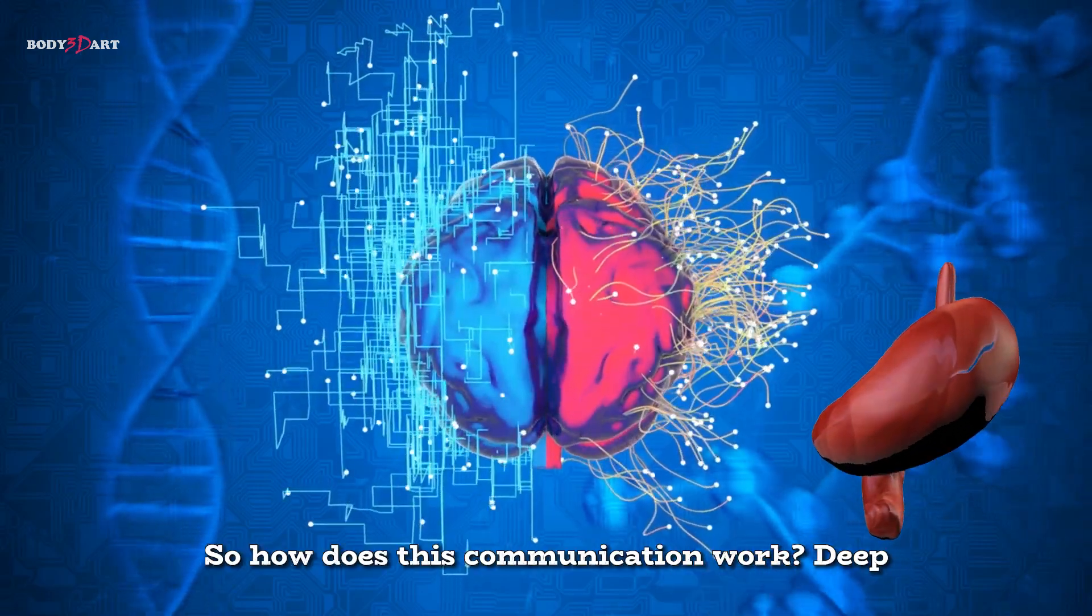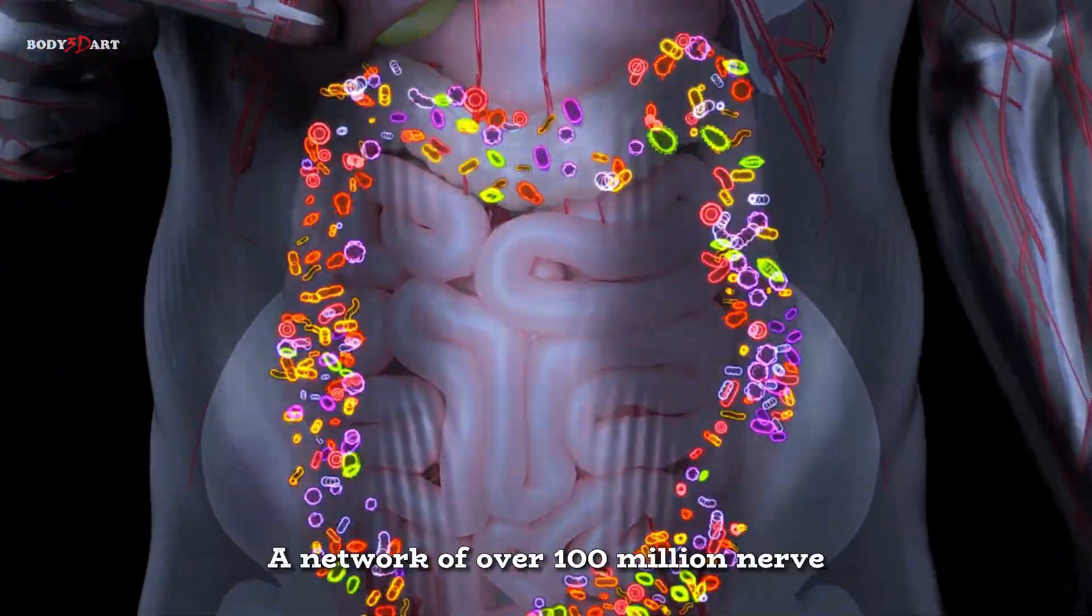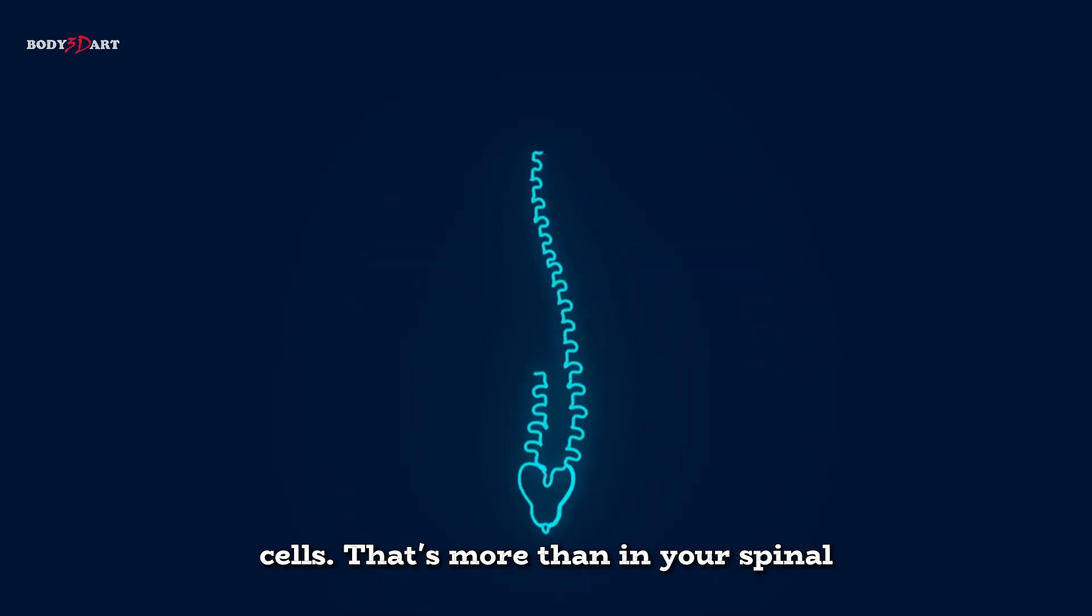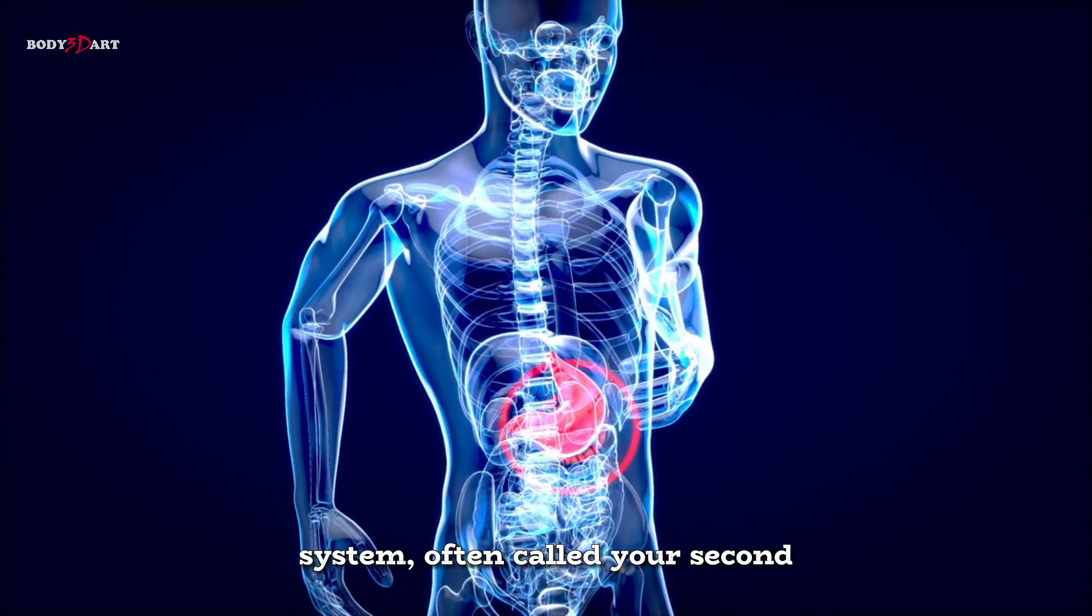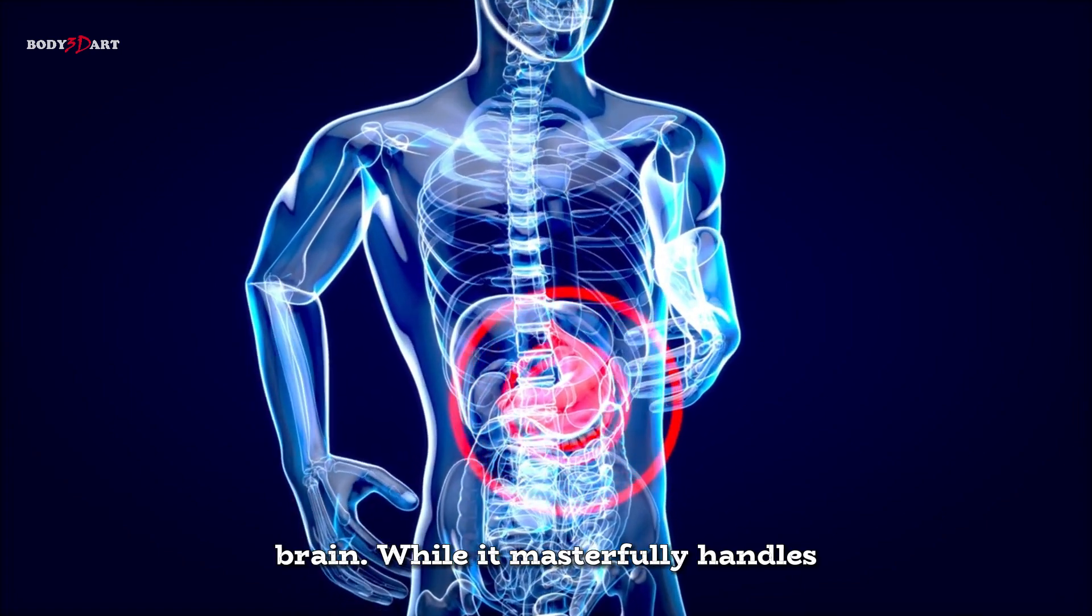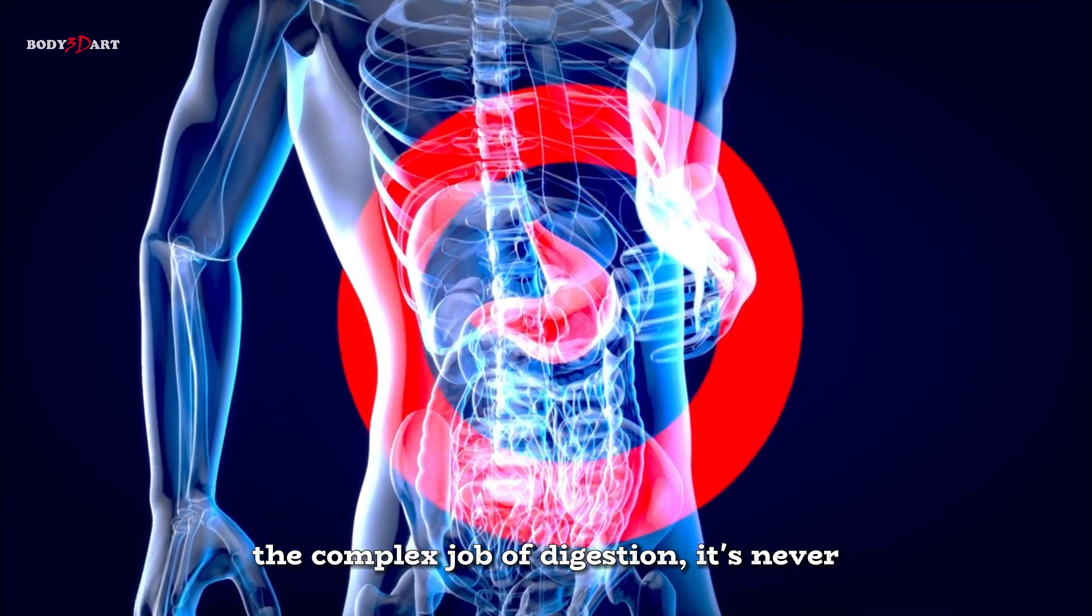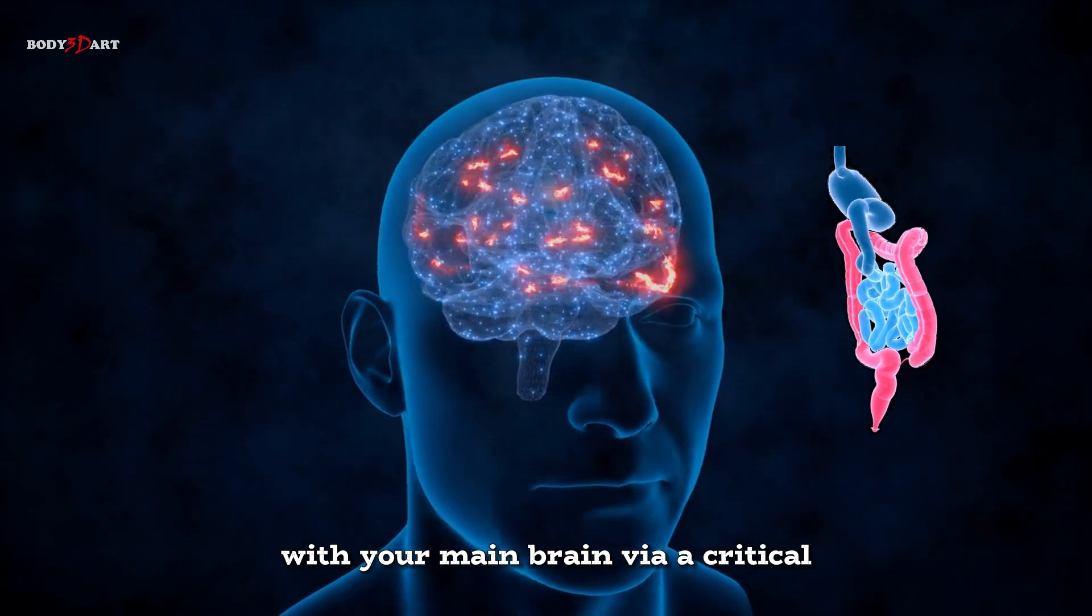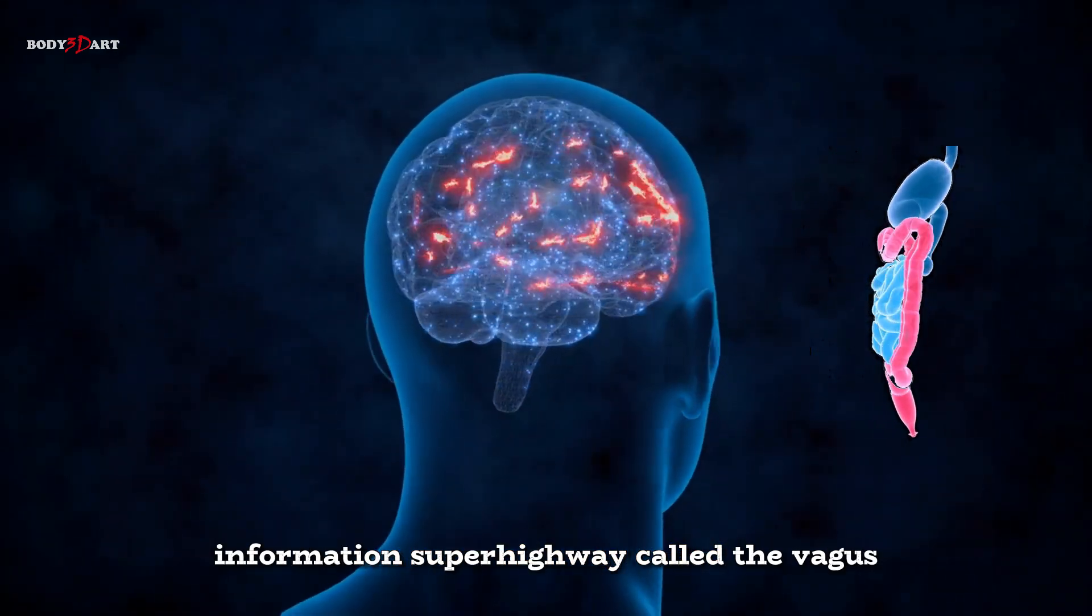So how does this communication work? Deep within your gut lies a hidden powerhouse, a network of over 100 million nerve cells - that's more than in your spinal cord. This is your enteric nervous system, often called your second brain. While it masterfully handles the complex job of digestion, it's never working alone. It's constantly chatting with your main brain via a critical information superhighway called the vagus nerve.